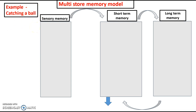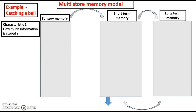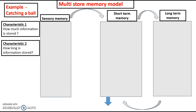When describing the characteristics of each stage of the multi-store model of memory, it's really important we use these key triggers. We need to have an understanding of the following: the first characteristic is how much information can be stored in each part of the memory. The second characteristic is looking at how long we can store that information. We're looking at the concept of storing information when you see it for the first time.